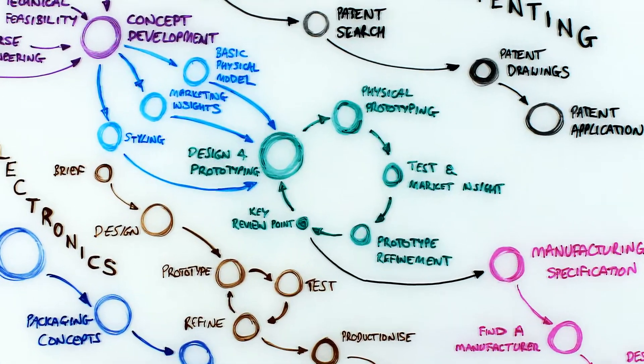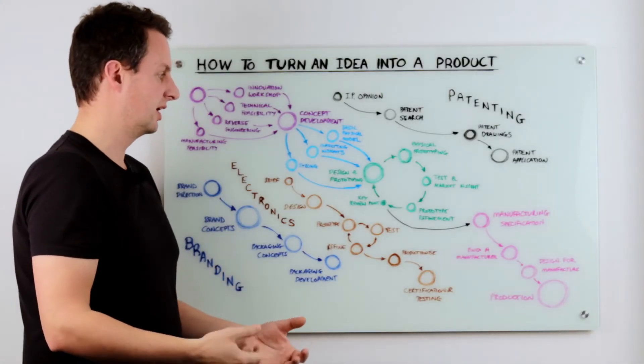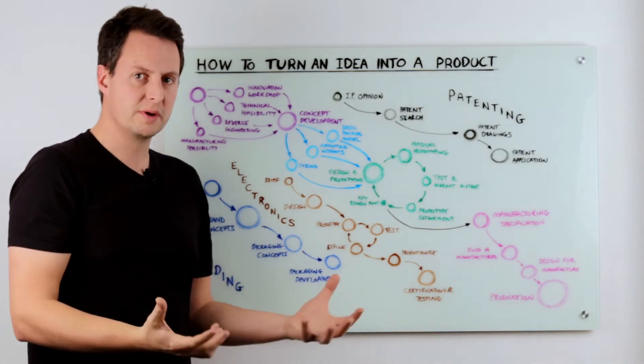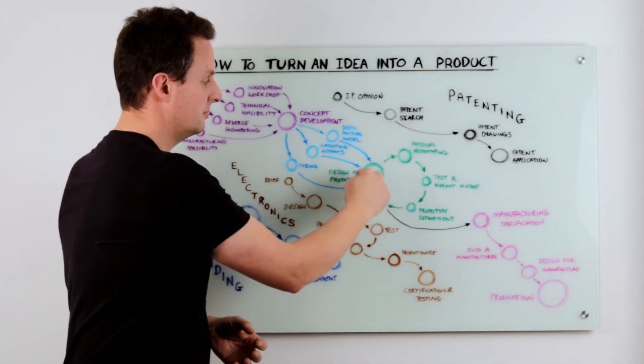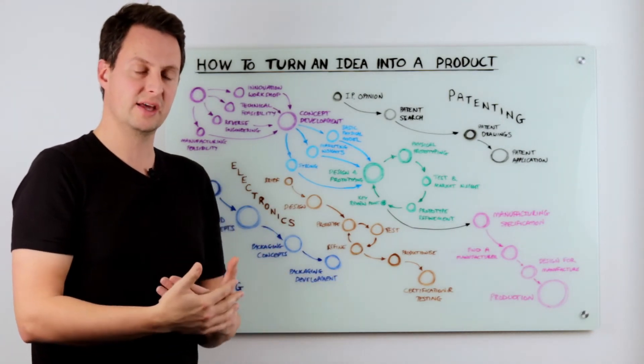Either way, you've got to get to a point where you've got a much more detailed concept before you then go into physical prototyping. And this really is where the iterative design process takes over. So it's really about prototyping, testing and confirming it with your market, prototype refinement, reviewing where you're at and whether it's all functioning correctly, whether you're happy with all the ergonomics of it. And potentially you might end up going around this loop two or three times to get the right product out the end of it.